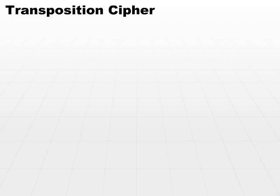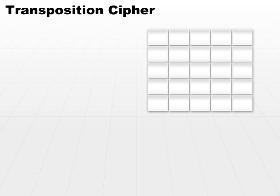Let's take a look at a few different types of ciphers. First, we have a transposition cipher. Now, a transposition cipher starts off with a keyword. The keyword I used was the name Isaac.